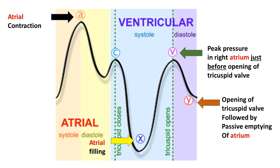The atrium gets filled progressively — 20%, 30%, 40% — up to a point where the atrium is filled, which can be called the peak pressure in the atrium. After the peak filling of the atrium is reached, the tricuspid valve opens and the atrium empties into the right ventricle. So this is the sequence.